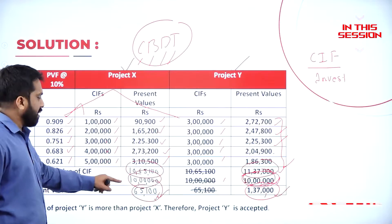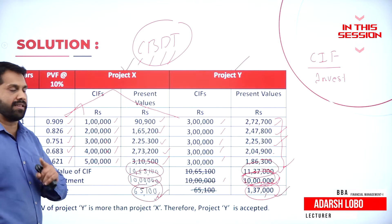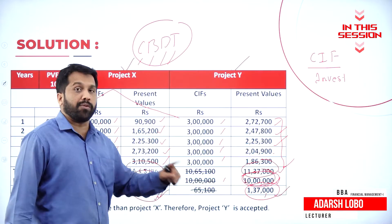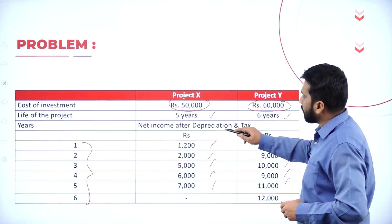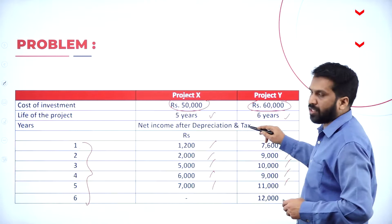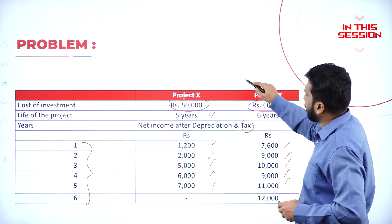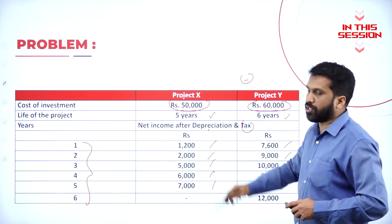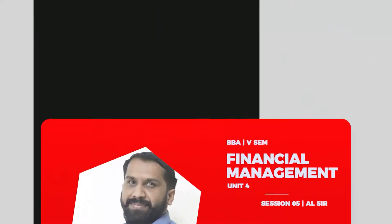As per project X, you get only 65,000. As per project Y, you get 1,37,000 more. The given figures are income after depreciation and tax — tax is already deducted, but depreciation we have to add back.